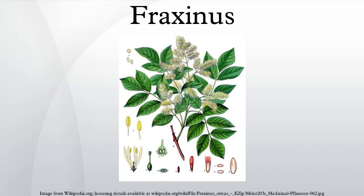Most Fraxinus species are dioecious, having male and female flowers on separate plants. If grown as an ornamental and both sexes are present, ashes can cause a considerable litter problem with their seeds. Rowans or mountain ashes have leaves and buds superficially similar to those of true ashes, but they are unrelated and belong to the genus Sorbus in the Rose family.